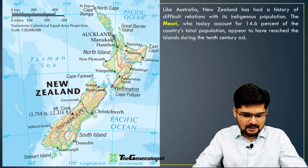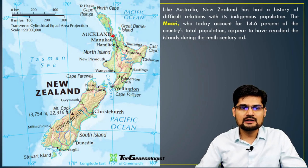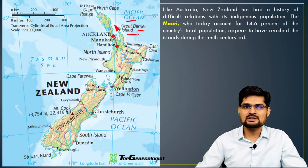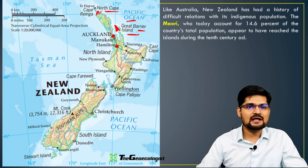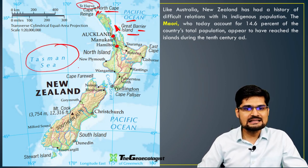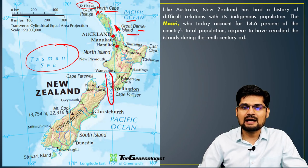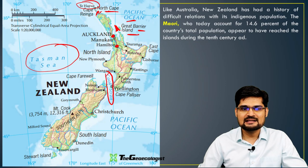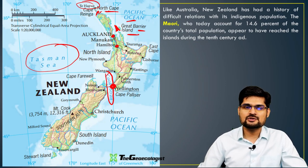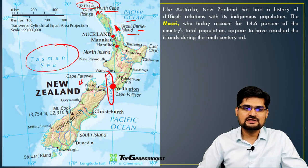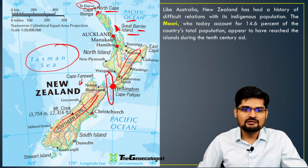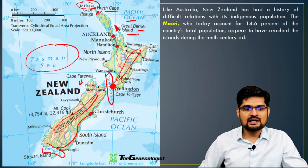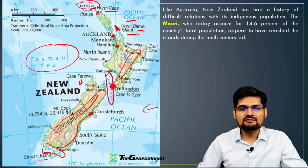Looking at New Zealand, the northern part has the Auckland region, Hamilton, and the Great Barrier Island — a barrier island between the mainland and Pacific Ocean. Then you have Cape Reinga and North Cape. This is the Tasman Sea. The Cook Strait is very important, named after Captain James Cook. Wellington is located exactly on the Cook Strait. The southern part of New Zealand has the Southern Alps — the entire area is mountainous, with Christchurch there. Down south, you have the Foveaux Strait and Stewart Island. These are the important features around New Zealand.